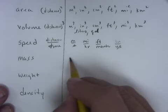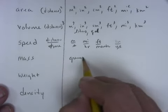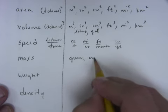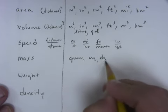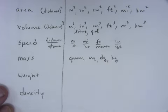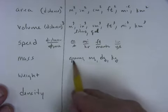Mass. Mass is grams and any kind of grams. Like milligrams, decigrams, kilograms. That's mass. Anytime you see grams, that's mass.